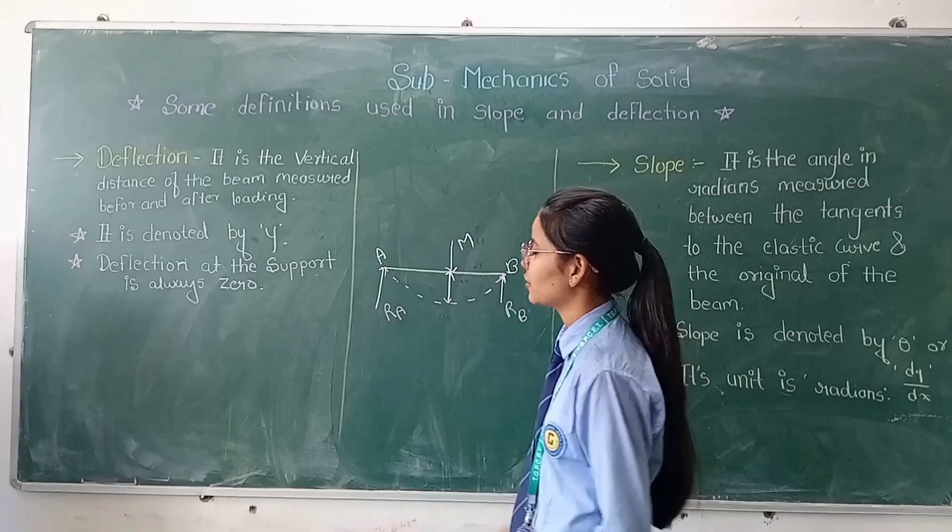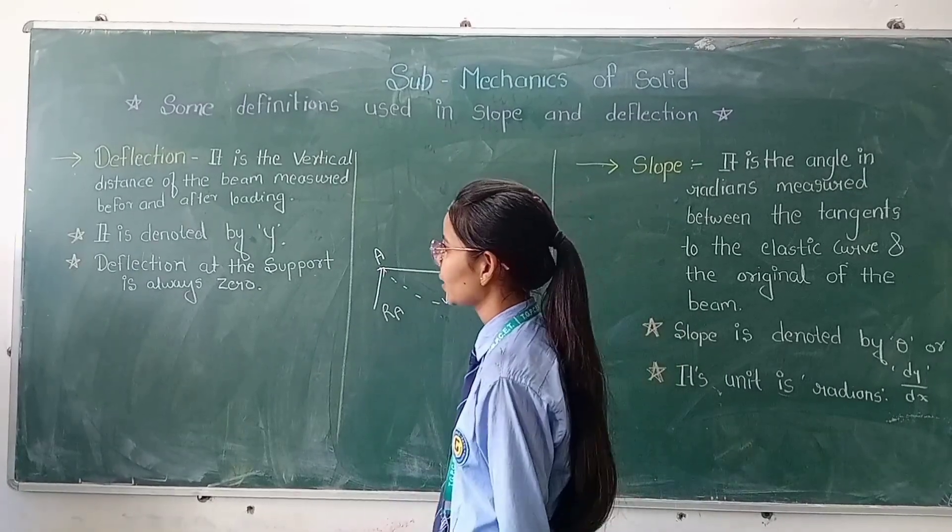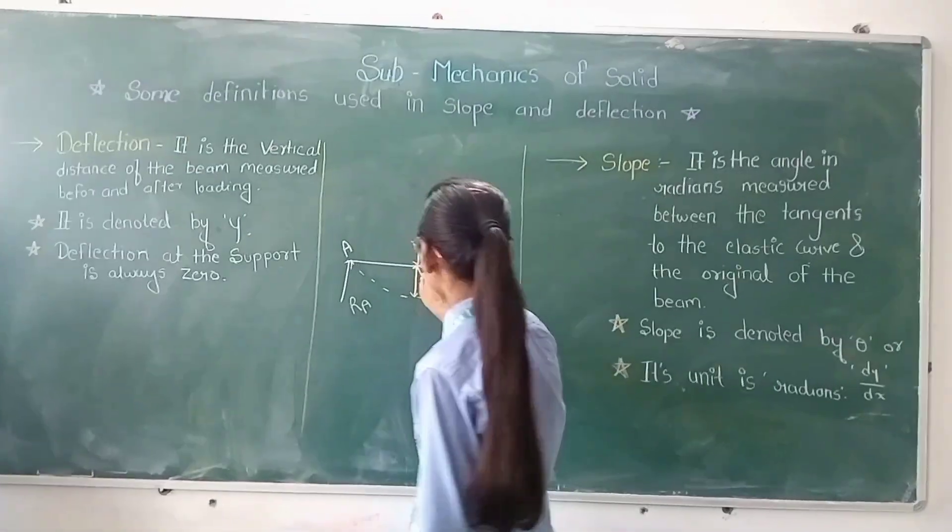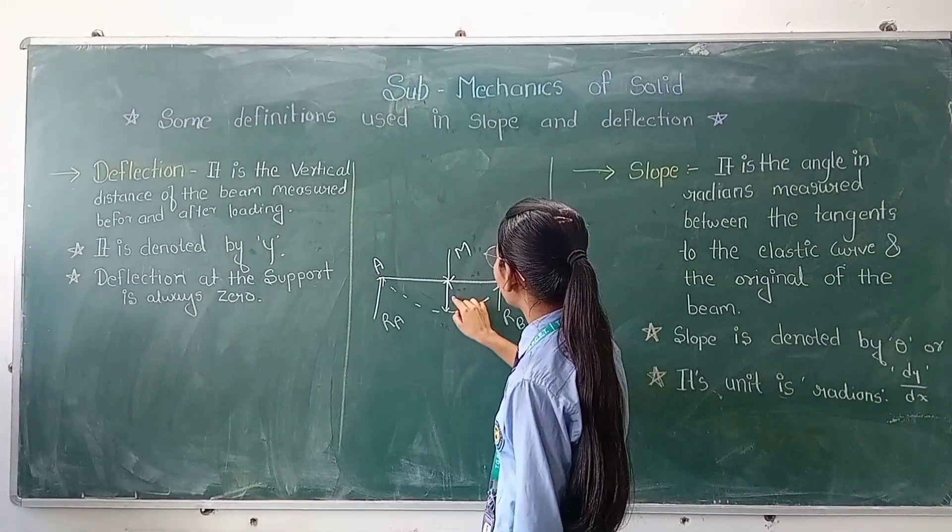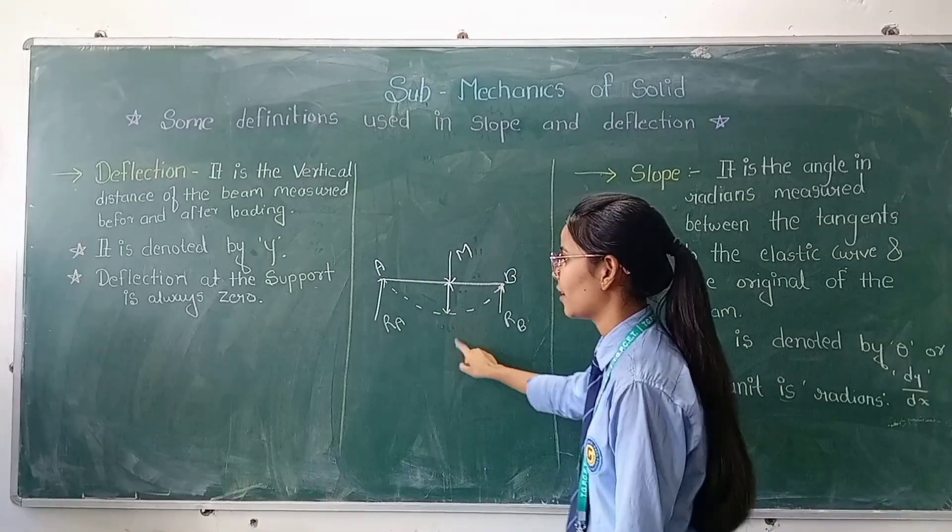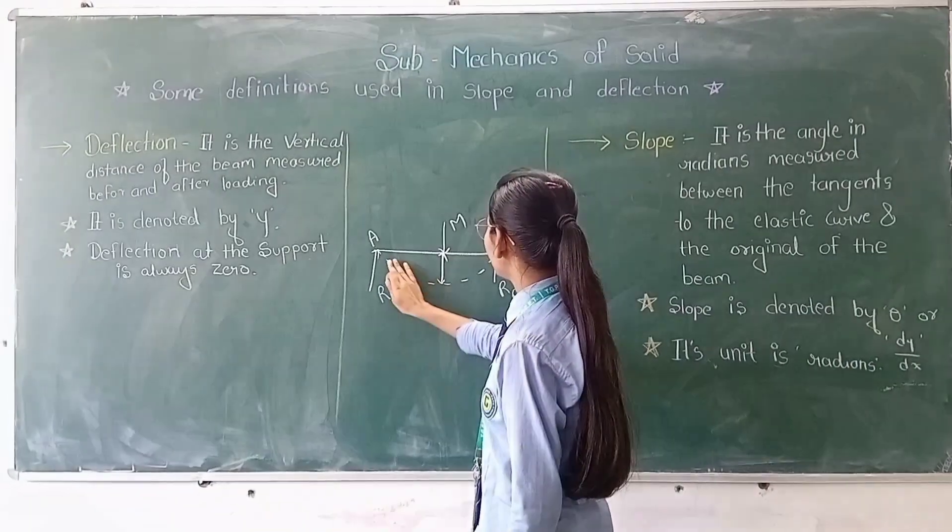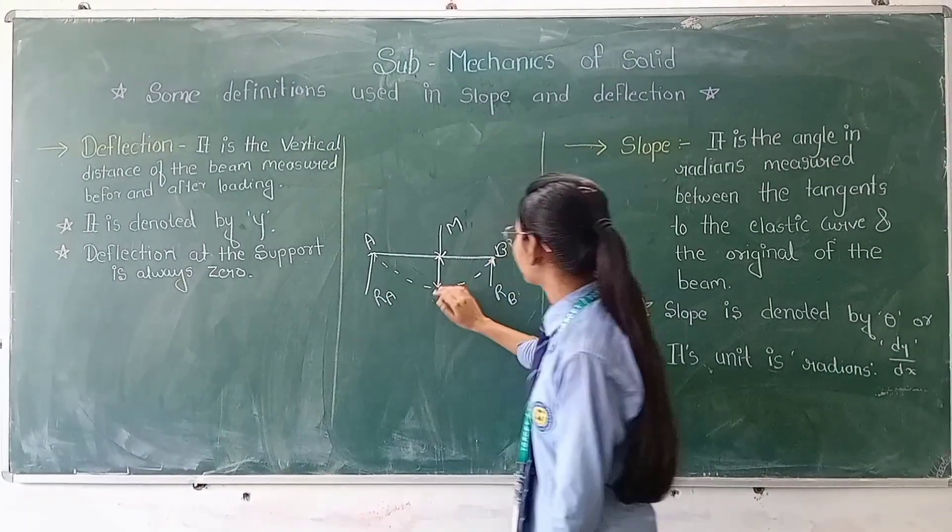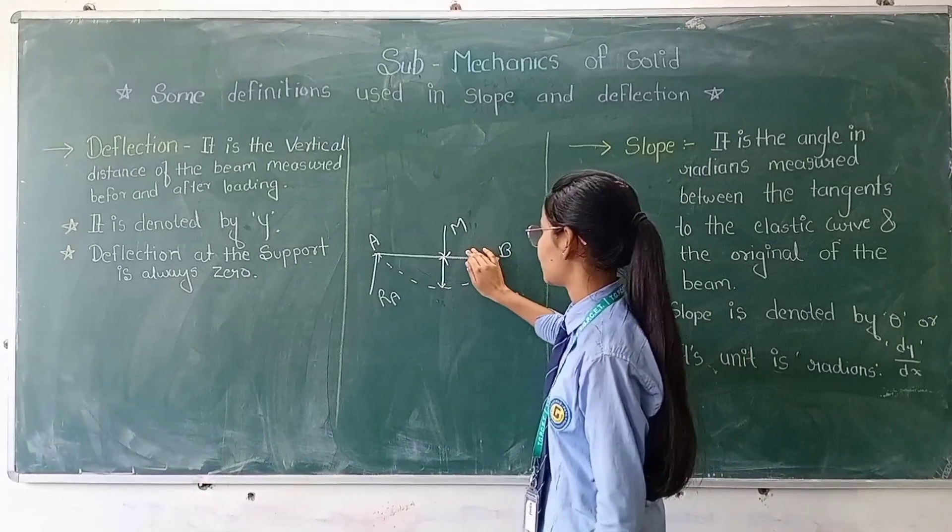I have written the definition of deflection. That is, before loading the distance is here, and after loading the distance which has come to its position. So when the load is zero, the beam comes back to its original position.